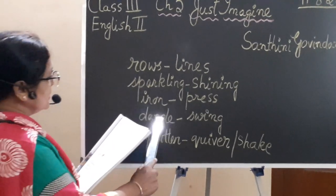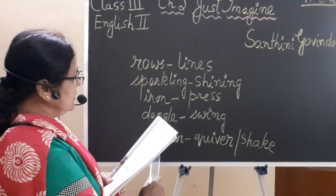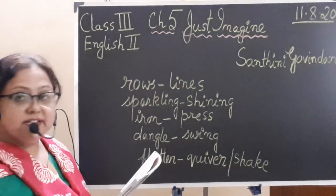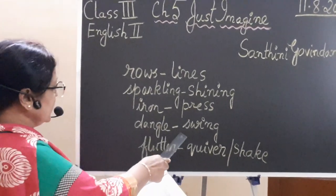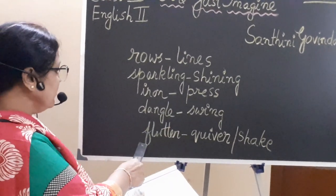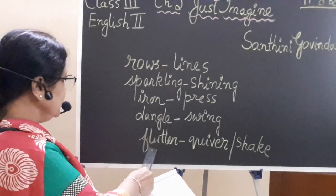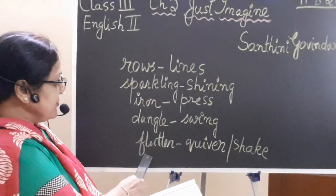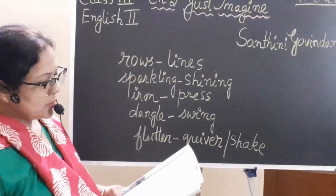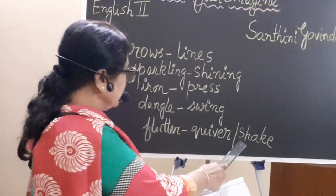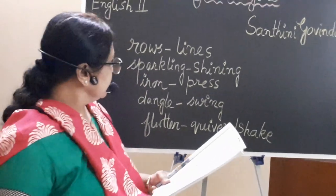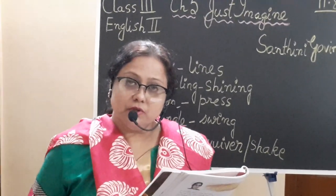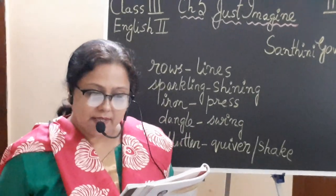The word 'dangle' — D-A-N-G-L-E — dangle means swing. 'Flutter' — F-L-U-T-T-E-R — flutter means shake, quiver. Children, mark the difficult words in your book. Learn their spellings and learn their meanings.